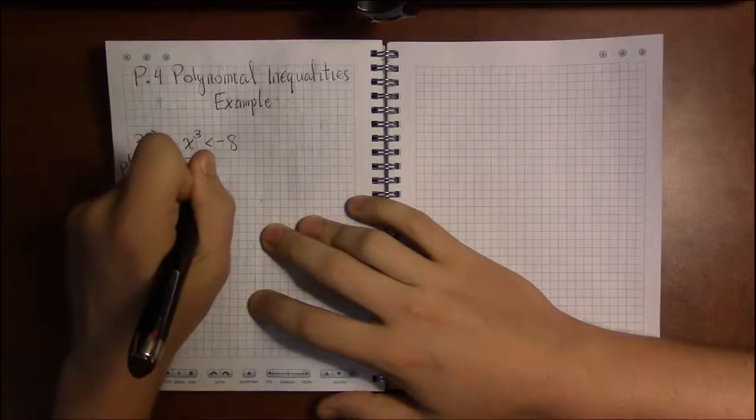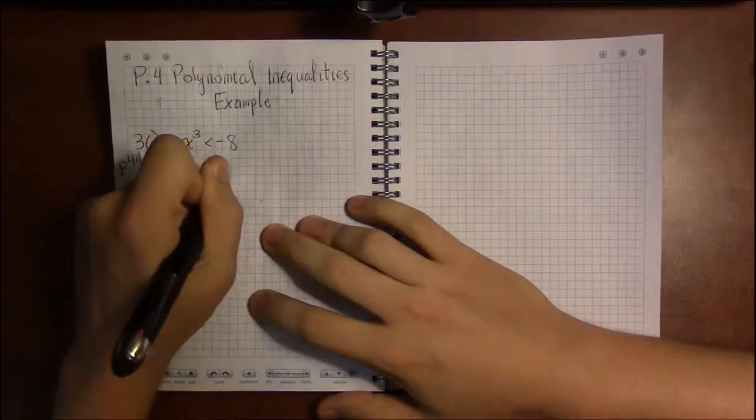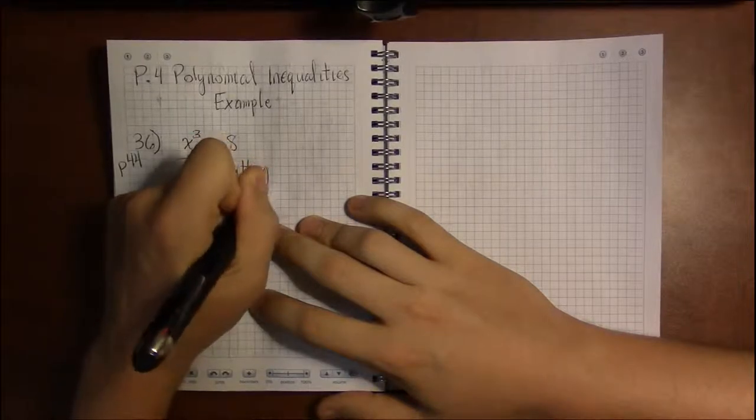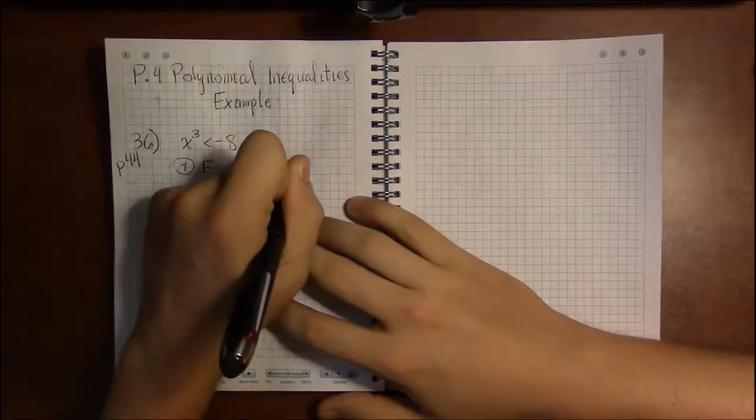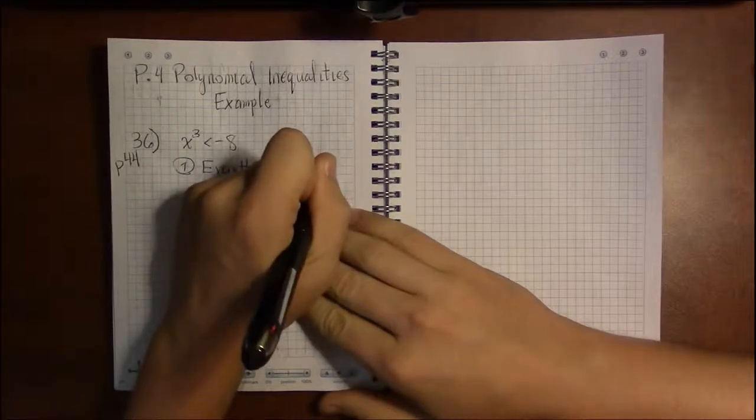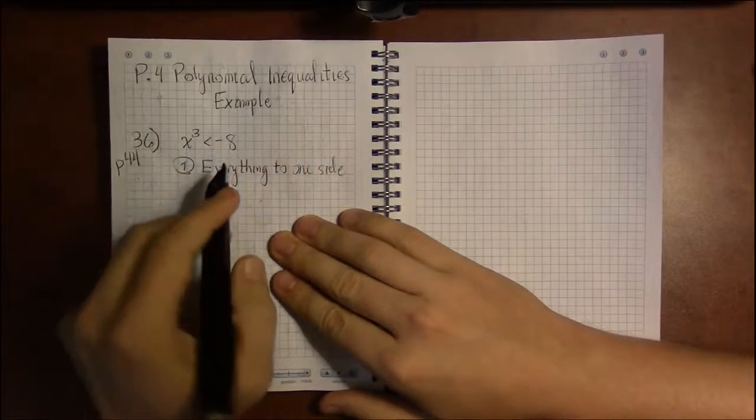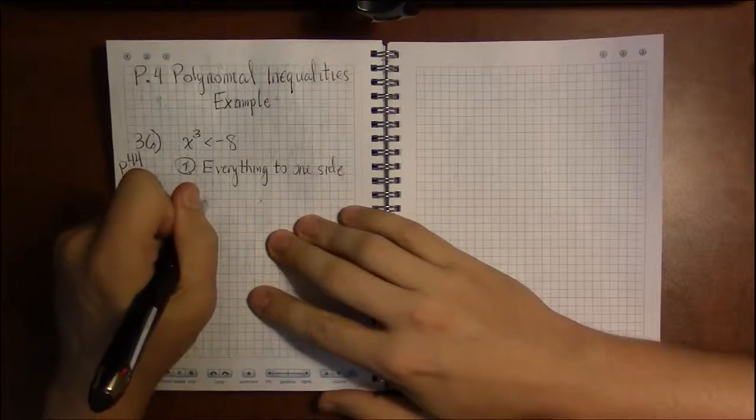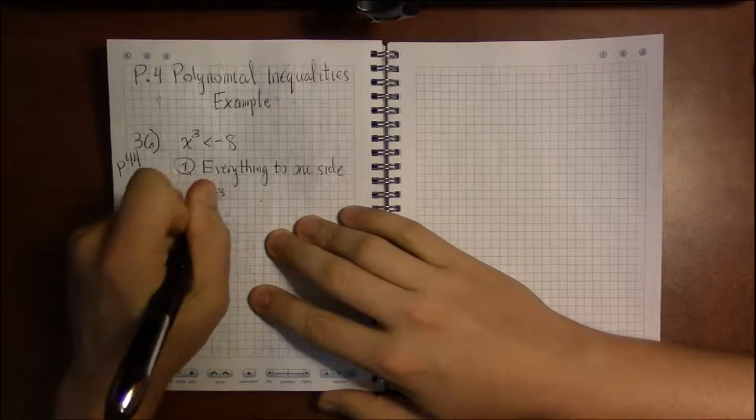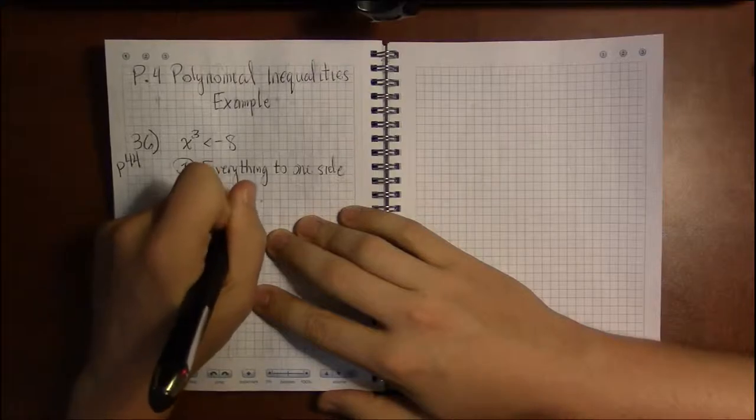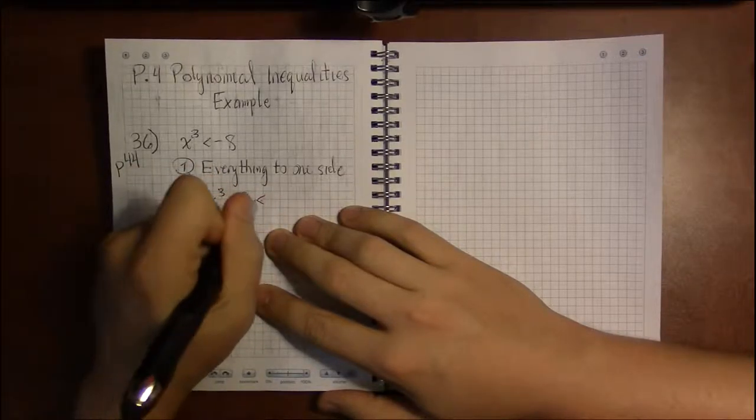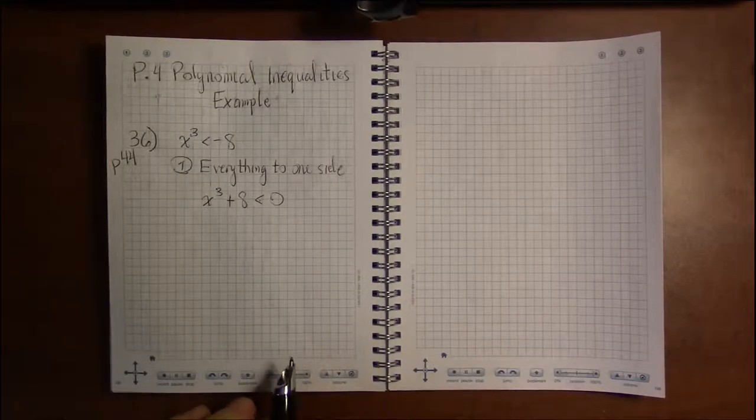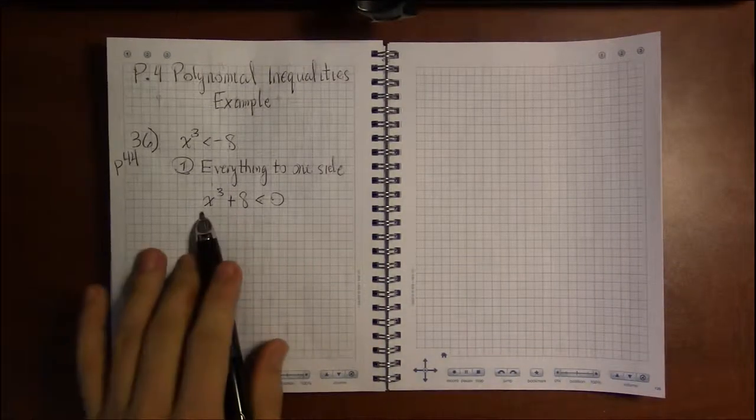With the polynomial inequality, we start off by getting everything on one side. That's step one. In this case, I can add 8 to both sides and that's going to get me x cubed plus 8 on the left and then less than 0 on the right. Now everything's to one side.